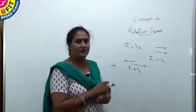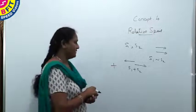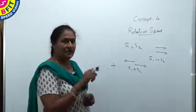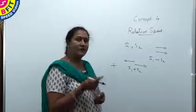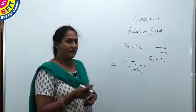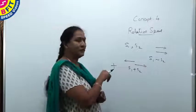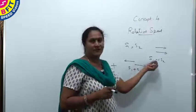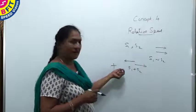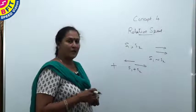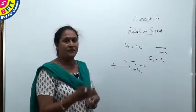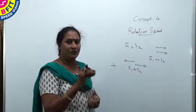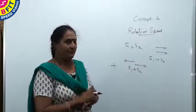When calculating two moving bodies with speeds S1 and S2, relative speed compares one body to the other. For the same direction it is the difference, and for opposite direction it is the sum. The main concept of relative speed is: what is the distance covered by a faster moving body in a particular time?